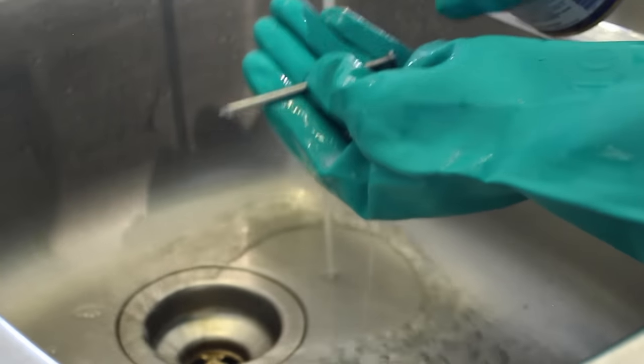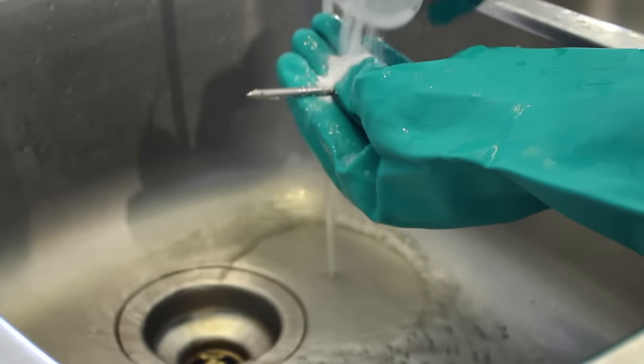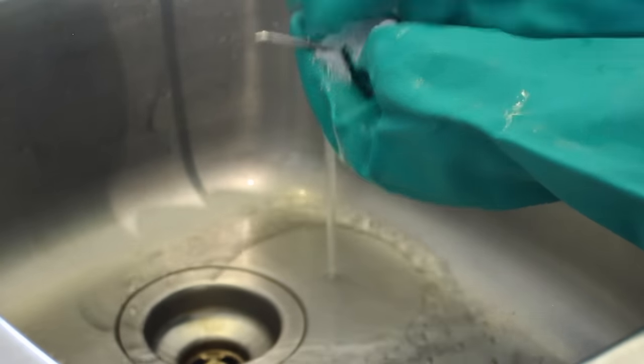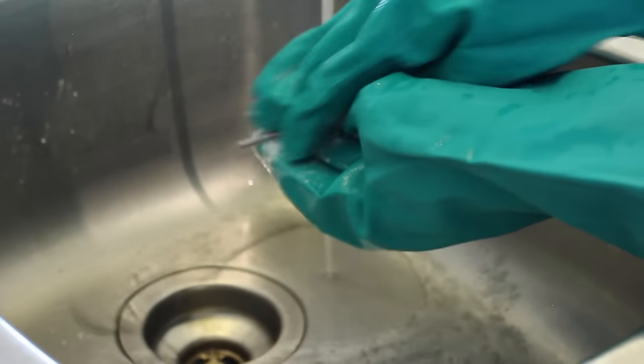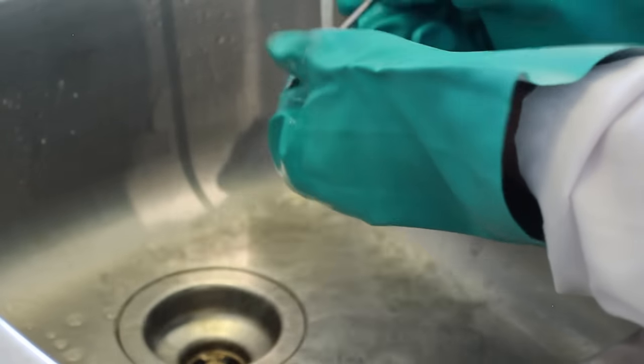Now we need to prepare our nail for electroplating. Sprinkle some of the metal cleaning powder onto your nail. Add a little bit of water to create a slurry and scrub it until it's clean. Then give it a good rinse underneath running water.